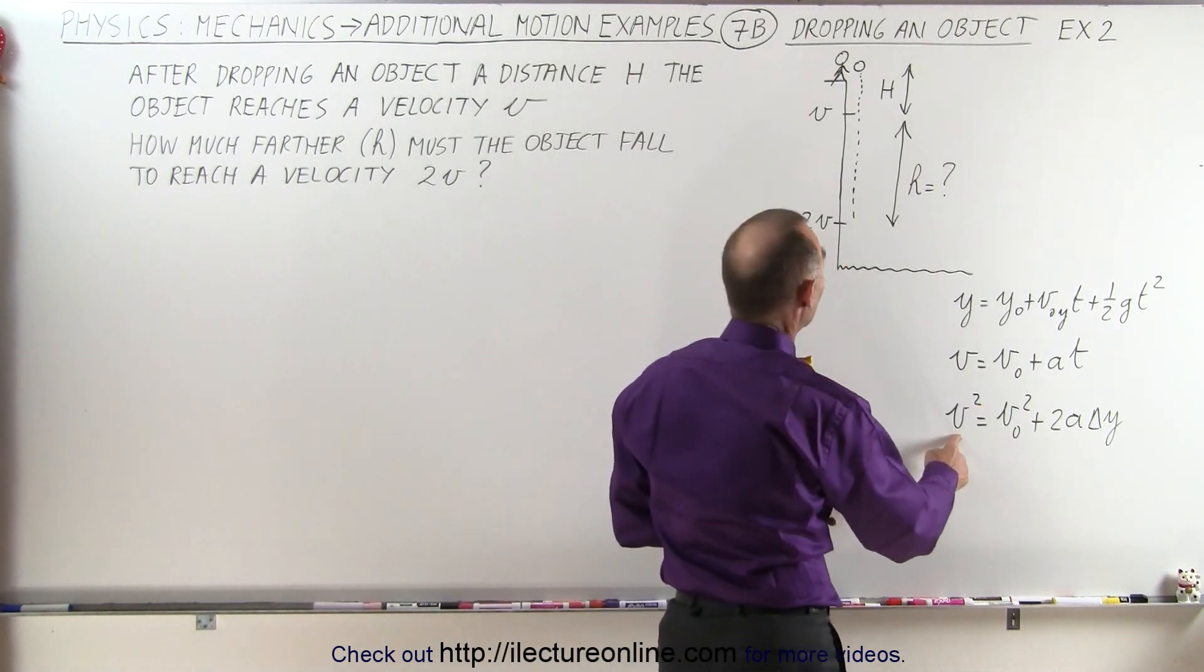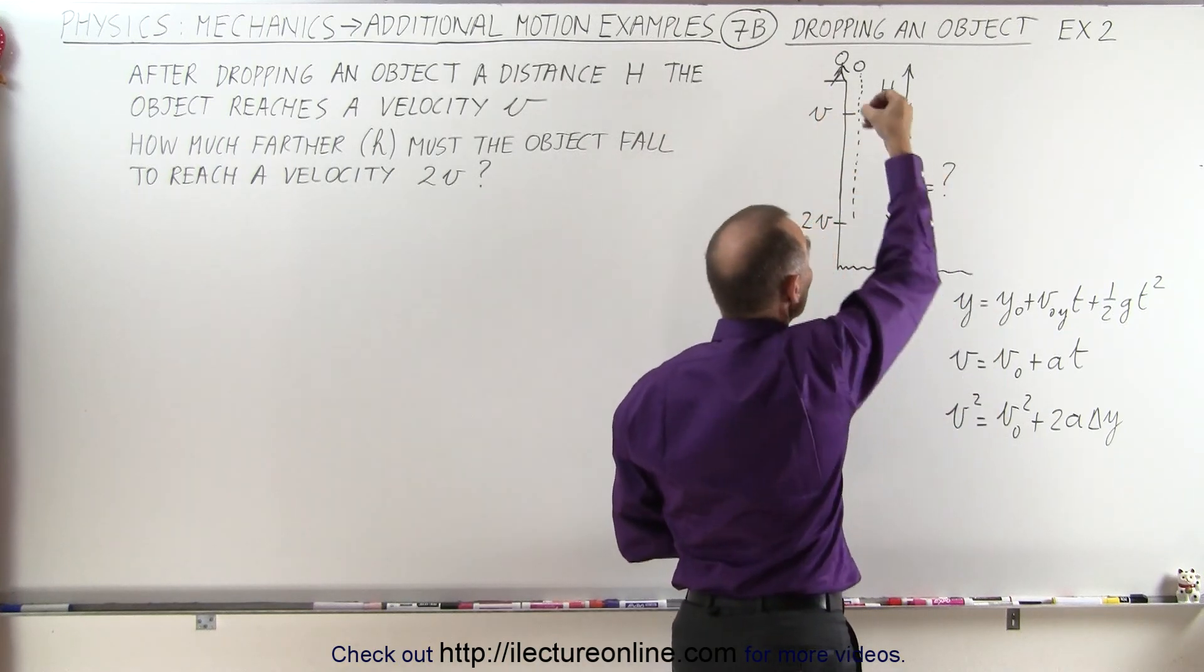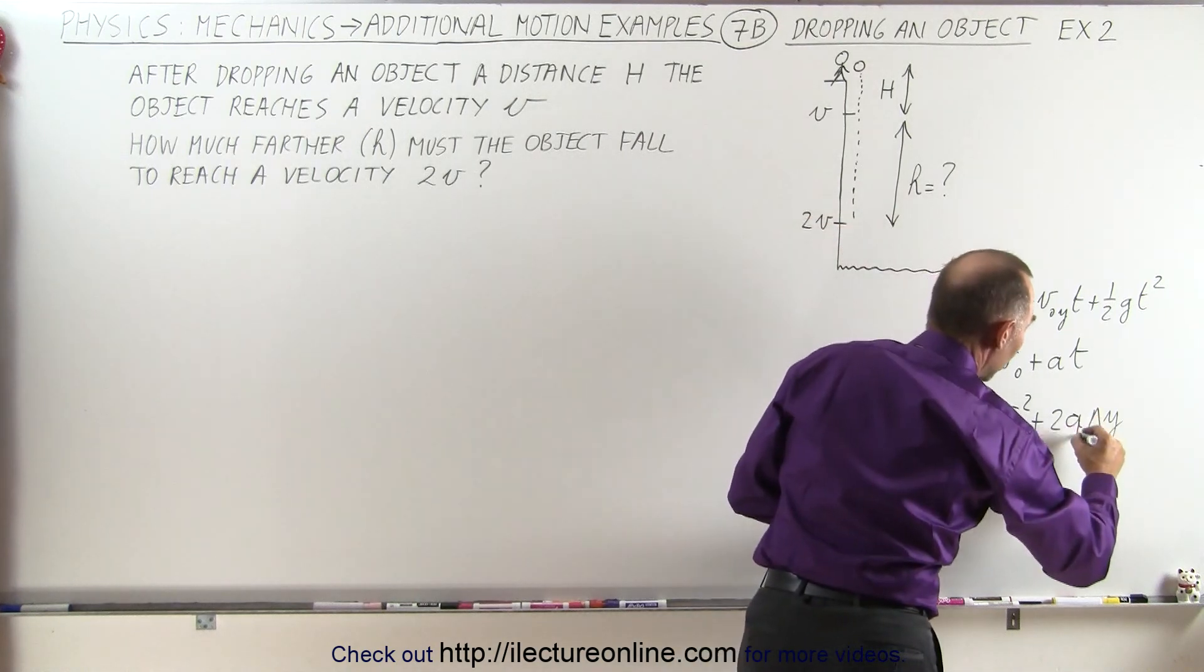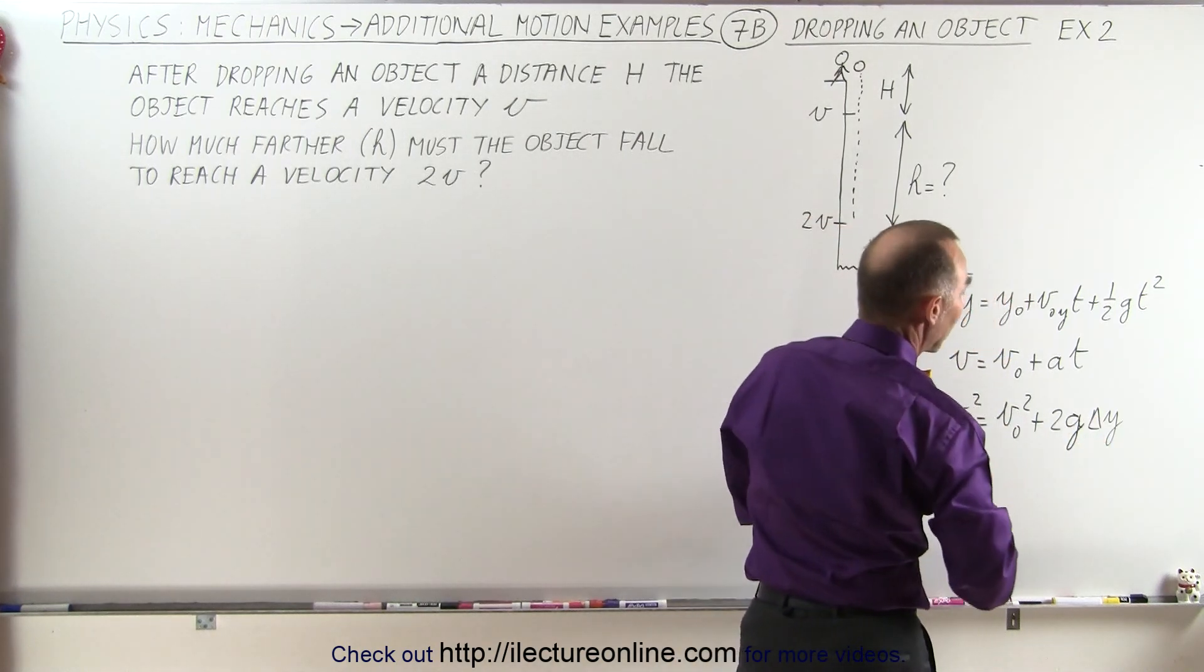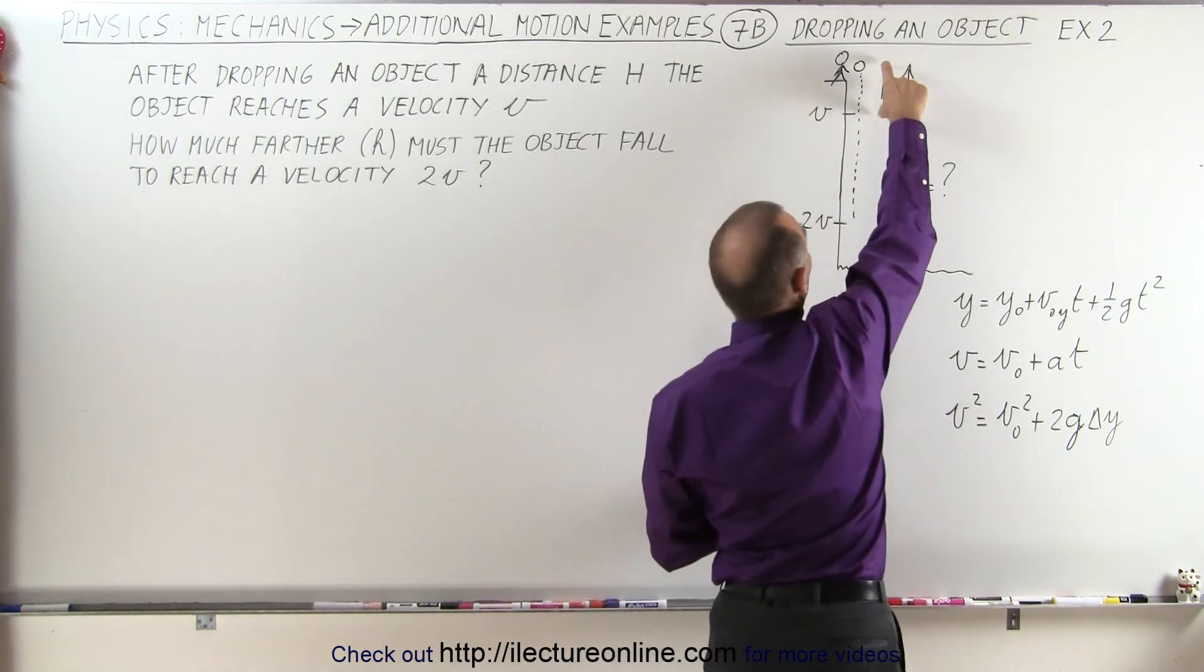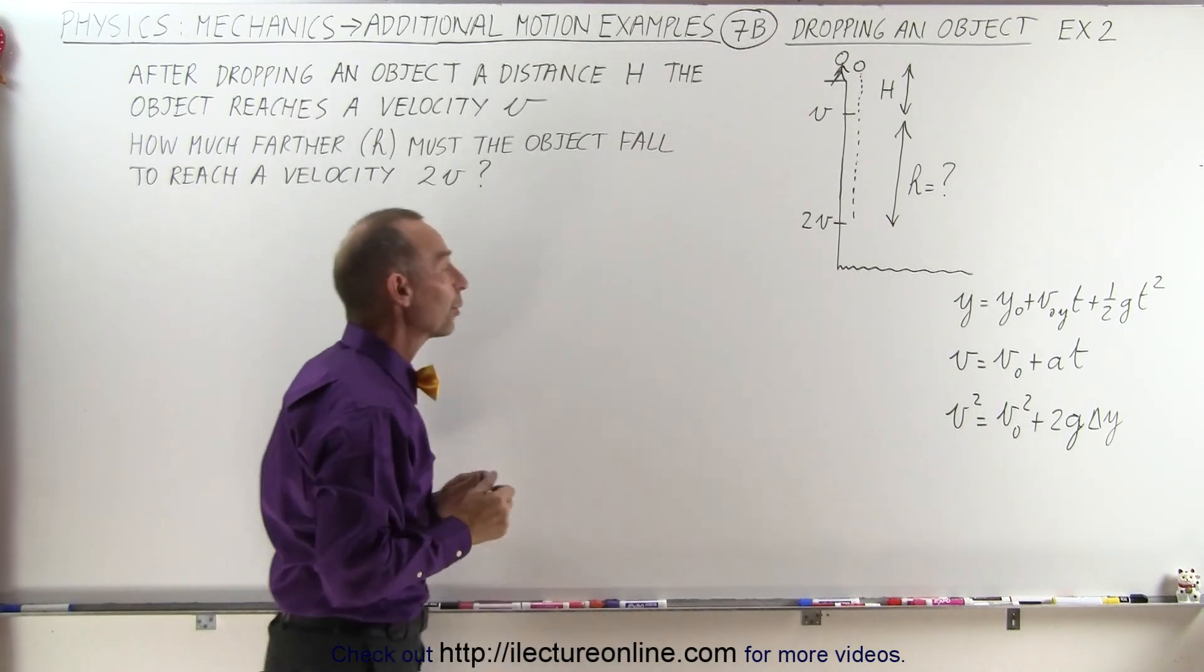We have the final velocity, which of course would be indicated here. The initial velocity, since we're dropping it, would be zero. The acceleration is the acceleration due to gravity, so we can call that g. And then we have the delta y, that's the displacement. And of course we do have a delta y here and a delta y there, so it looks like that's probably the right equation.